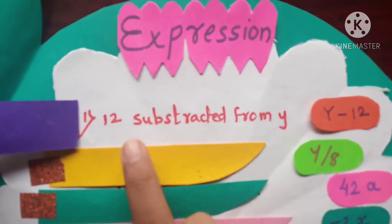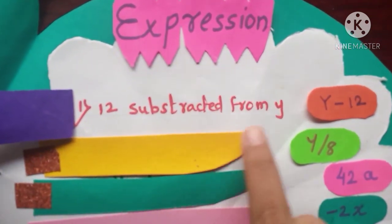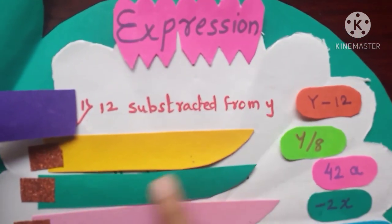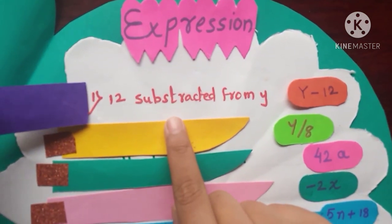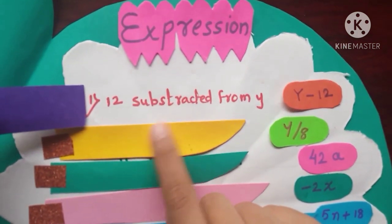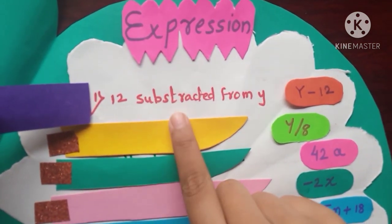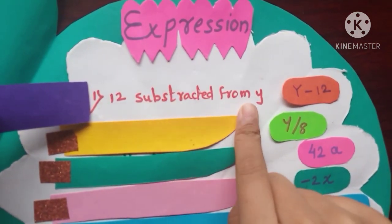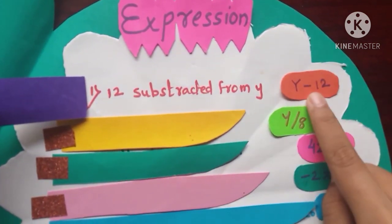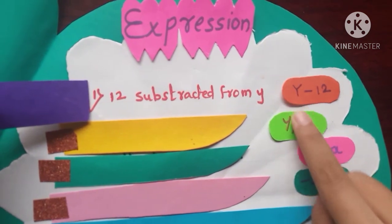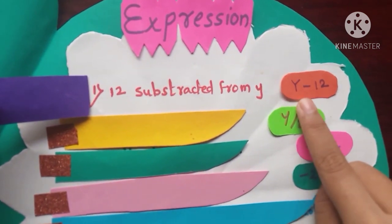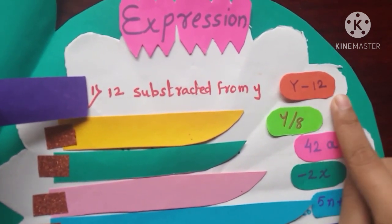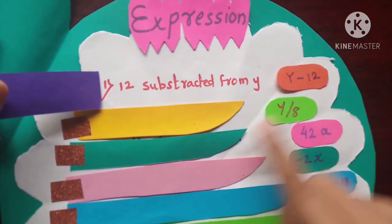The first question is: 12 subtracted from y. Subtracted means minus, so 12 subtracted from y — the answer is y minus 12. You can see the answer here.